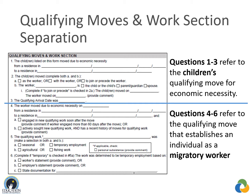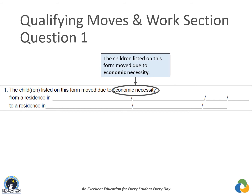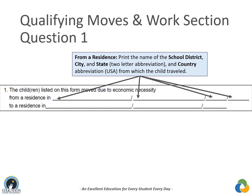Question 1 reads: 'The children listed on this form move due to economic necessity from a residence in [blank] to a residence in [blank].' The recruiter must verify that all moves were made due to economic necessity — the child and worker moved because they could not afford to stay in the current location. 'From a residence in' is the child's last place of residency immediately prior to the qualifying move; provide the school district, city, state abbreviation, and country abbreviation from which the child traveled.